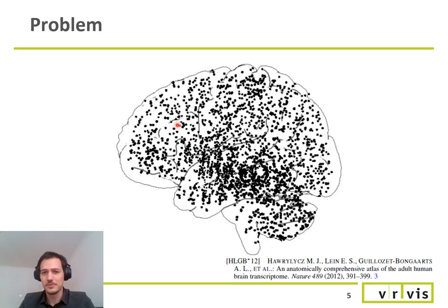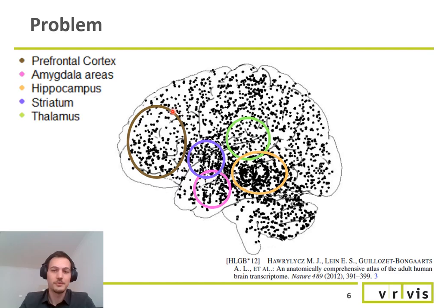In recent years the data has become available not only on the regional level. Just one example, the Allen Human Brain Atlas where we have microarray data of 3702 biopsy sites, here depicted as black dots. And for every biopsy site we have the expression level of 30,000 genes, so for every dot we have 30,000 values.